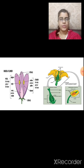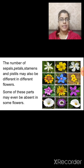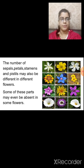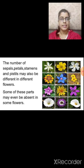So, a flower consists of petals, sepals, stamen, and pistil. The number of sepals, petals, stamens, and pistils may differ in different flowers. Some of these parts may even be absent in some flowers — it is not necessary that every flower has all these parts.